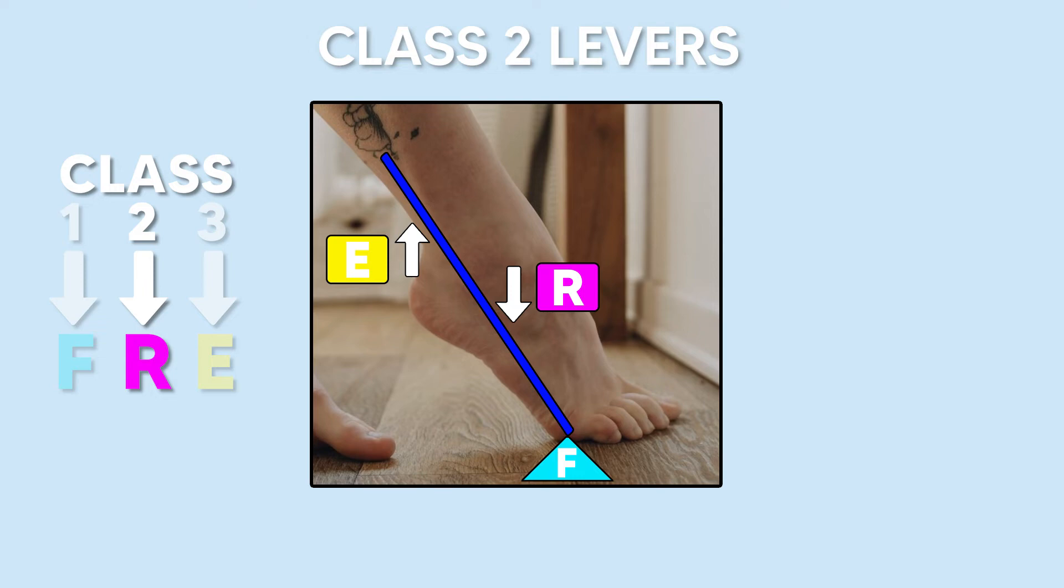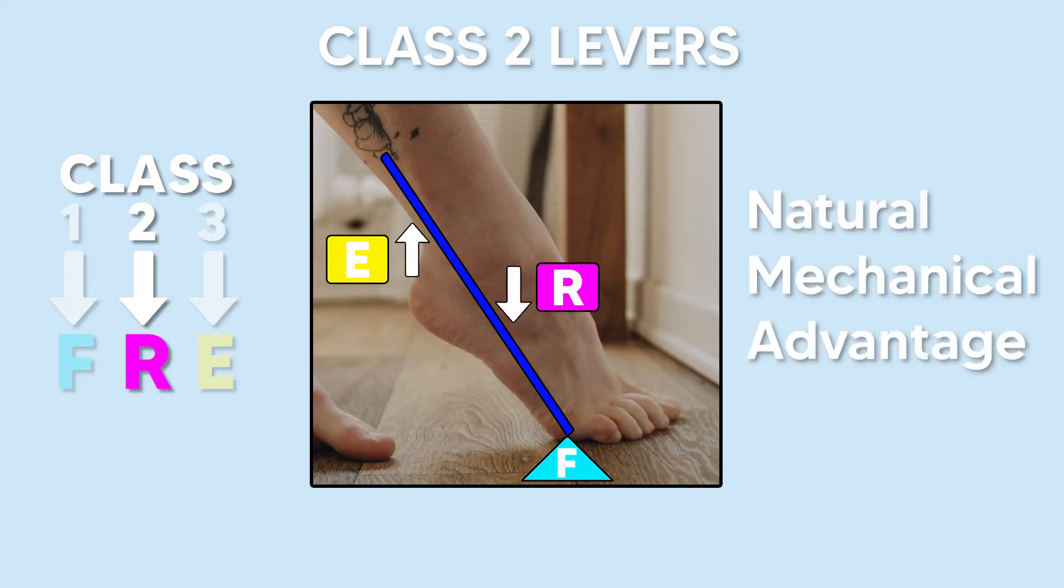The classic second class lever in the body is seen during a heel raise. The effort is the gastrocnemius-soleus muscle pulling at the calcaneus, the resistance is our body weight, and the fulcrum is the ball of our foot. An important thing to remember about second class levers is that they have a natural mechanical advantage, which partially explains why we can perform a single-legged heel raise with a relatively small muscle.